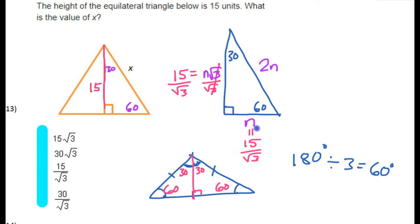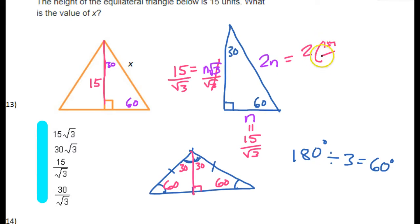Now, remember, once we know n, then we can do 2n for the hypotenuse. So if n is 15 over radical 3, then 2n should be 2 times 15 over radical 3. Well, that's just going to equal 30 over radical 3.